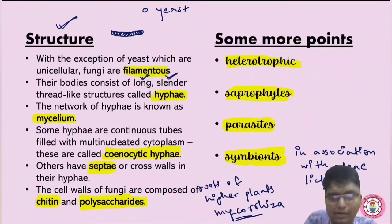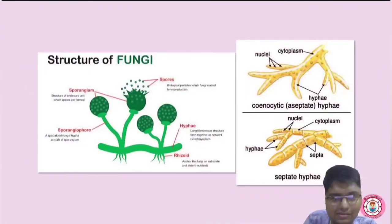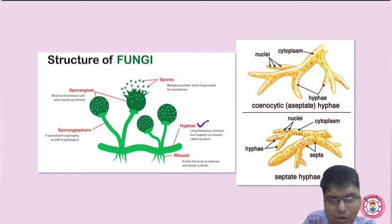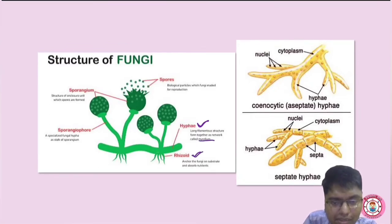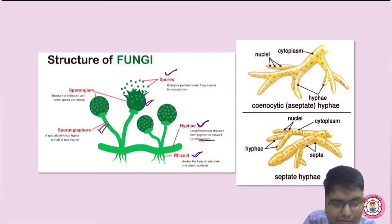Looking at the structural diagram: this is a hypha — a long filamentous structure. Together they form a network called mycelium. This is the rhizoid, which is a root-like structure. This is the sporangium, from which spores are released out. This is known as the sporangiophore.